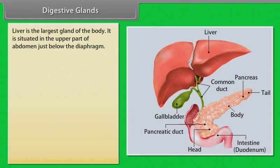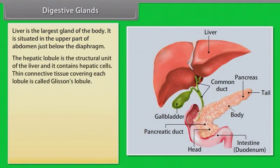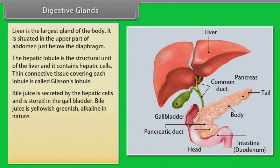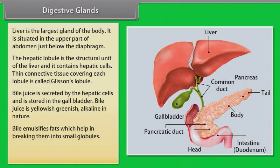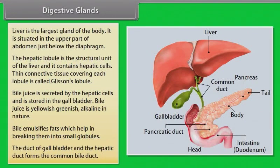The liver is the largest gland of the body, situated in the upper part of the abdomen just below the diaphragm. The hepatic lobule is the structural unit of the liver and contains hepatic cells. The thin connective tissue covering each lobule is called Glisson's capsule. Bile juice is secreted by the hepatic cells and stored in the gallbladder; it is yellowish-green and alkaline in nature. Bile emulsifies fats, helping to break them into small globules. The duct of the gallbladder and the hepatic duct form the common bile duct.